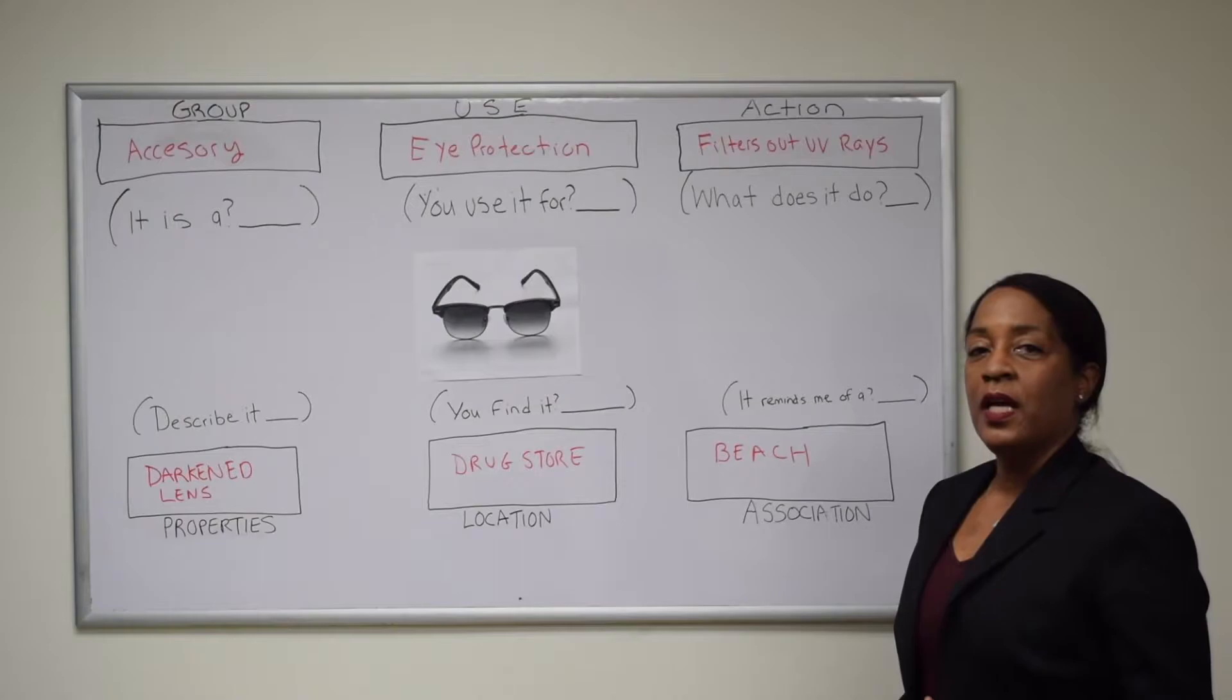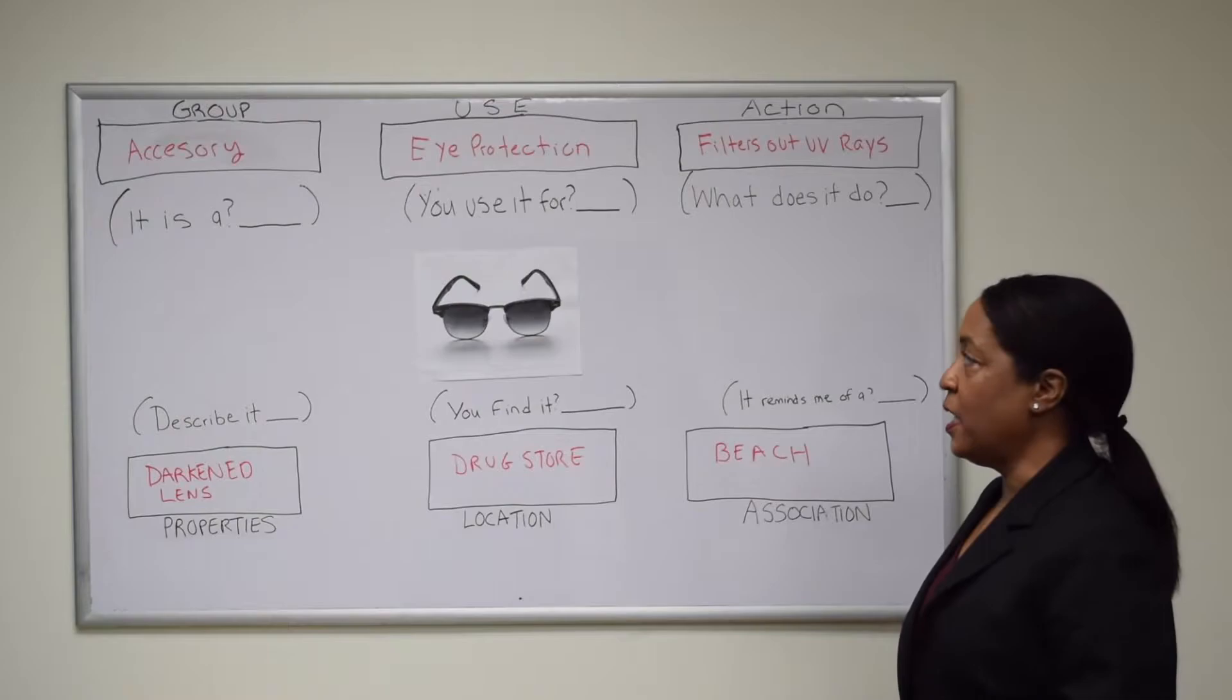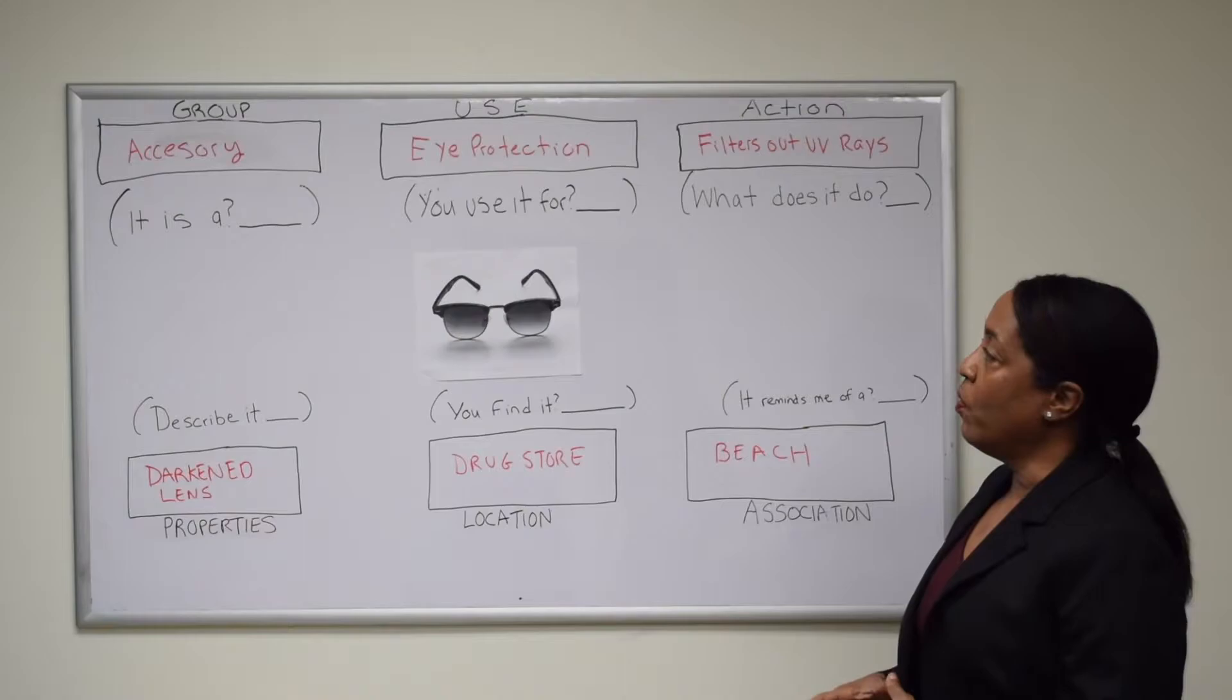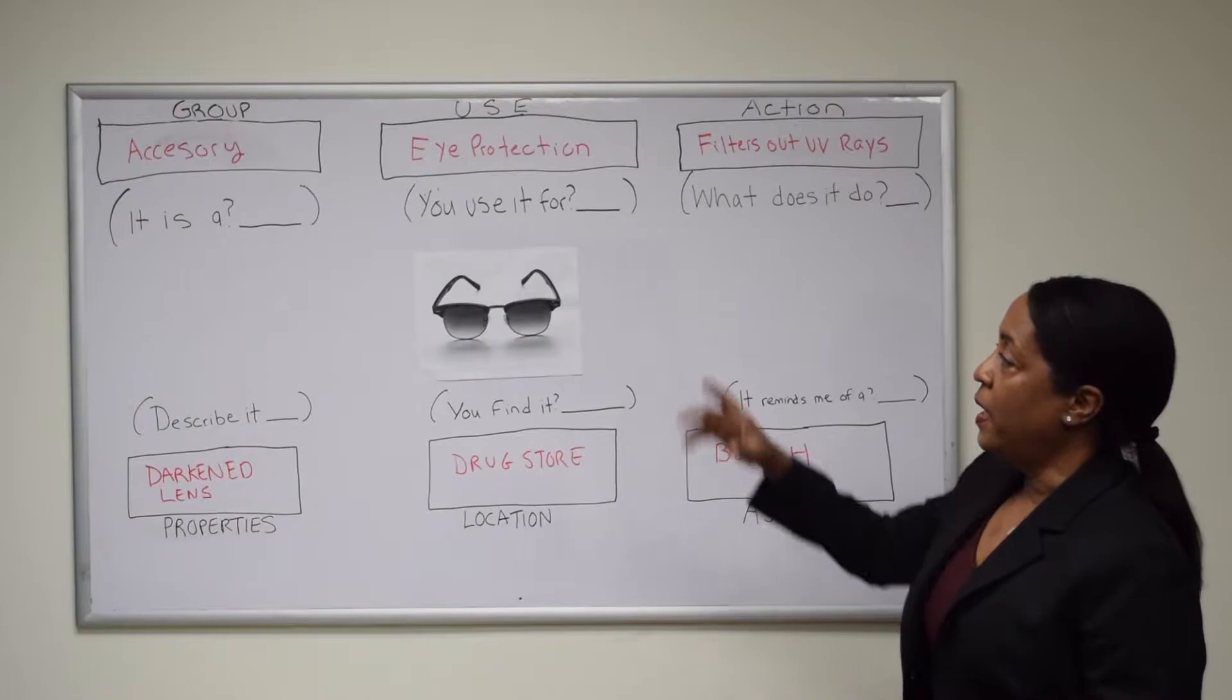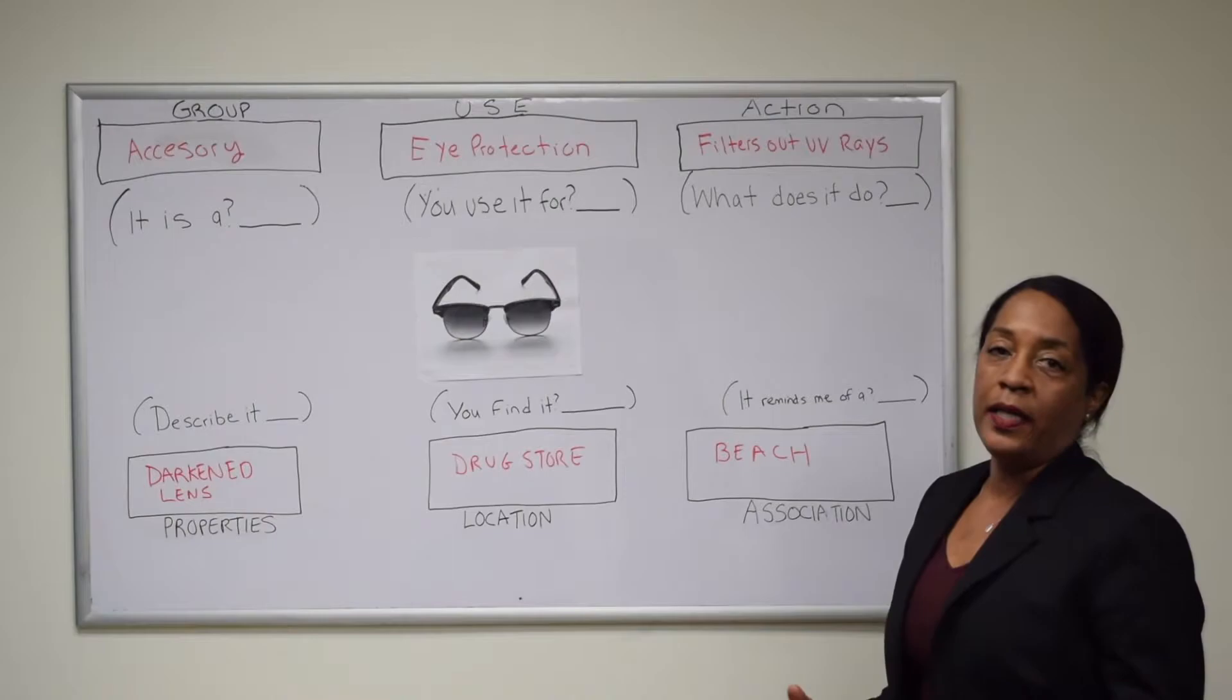For patients having problems with word finding, this is our semantic feature analysis. This is what it looks like and I will show you what the patient is doing in a real therapy session. Basically the semantic feature analysis will have a photograph that will be in the middle, and then it's going to be a series of questions that the patient will answer about the photograph.